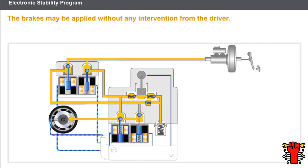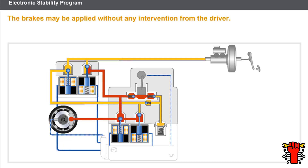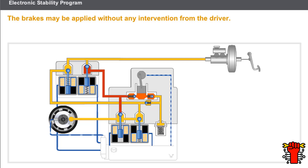Let's take a closer look at the hydraulic operation of the system. Depending on the situation, the brakes may be applied without the intervention of the driver. The computer closes the isolation solenoid and opens the inlet solenoid. The pump is activated and applies a brake pressure to the wheel concerned. If the wheel reaches the slip point, the inlet solenoid closes and the outlet solenoid opens. The computer controls the wheel regulation as many times as it judges necessary.